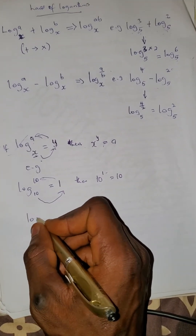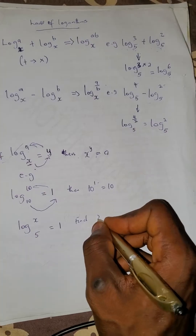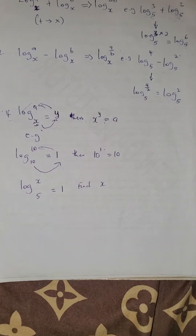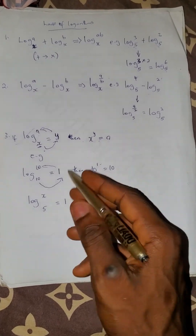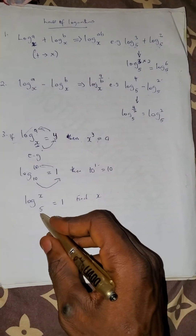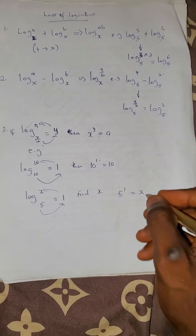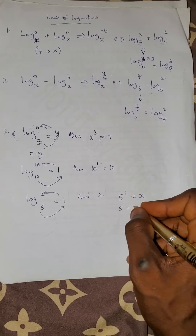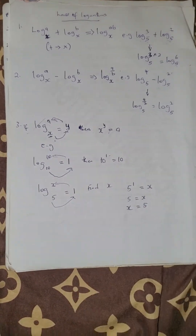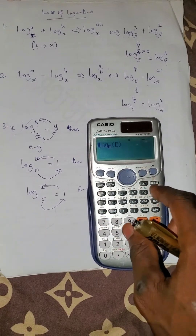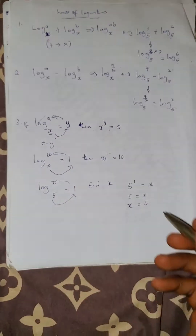For instance, if log x base 5 equals 1, find x. Using this law: 5 raised to power 1 equals x. Since 5 to the power 1 is 5, then x equals 5. You can verify: log 5 base 5 equals 1, which is correct.